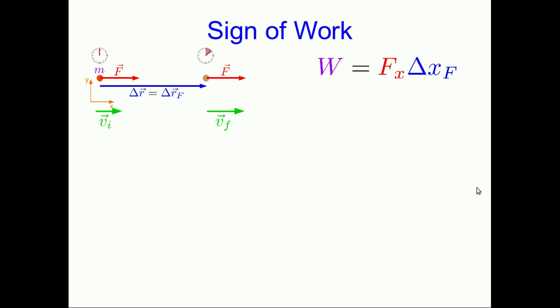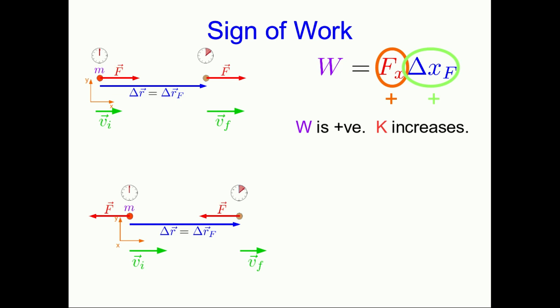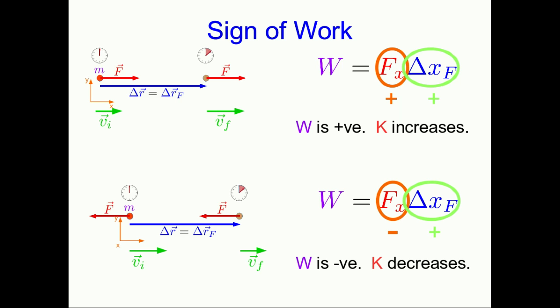Let's look at the sign of this work and make sure it behaves the way we think it should. In the picture, the force and the force displacement vector point in the same direction — both in the positive x direction. So F_x is positive and delta x_f is also positive, and so the work is positive, meaning the kinetic energy increases. That's what we expected: when the force points in the same direction as the force displacement, we get positive work. Similarly, if the force is arranged in the opposite direction, F_x is just negative the magnitude of F, and so the work comes out negative and kinetic energy decreases, as expected.